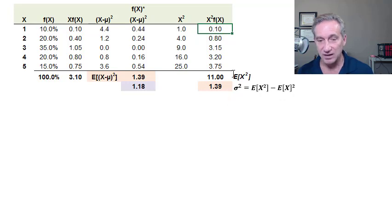And so that means if we get this, we have the variance very easily. And the variance is the expected value of x squared, which is here 11, minus the expected value of x, which after all is the mean of 3.1 squared. This difference in this case is 1.39 and necessarily equals the same variance that we got here the longer way. So that's the variance.